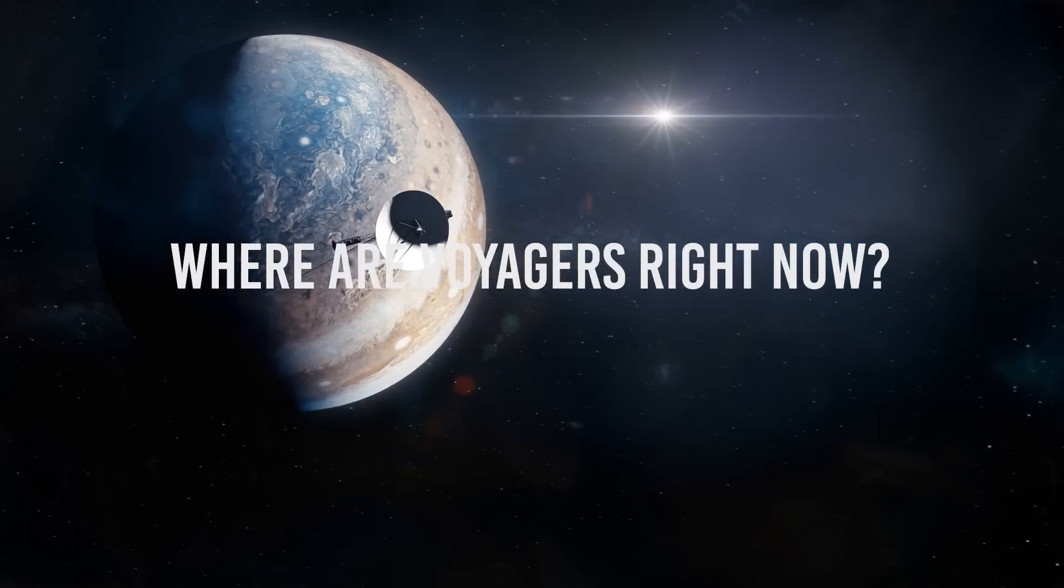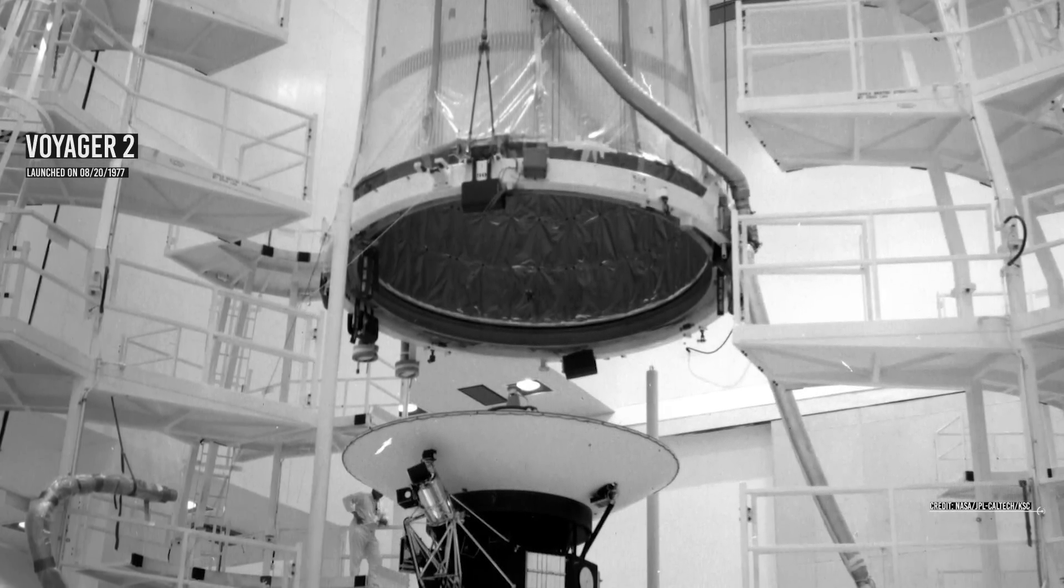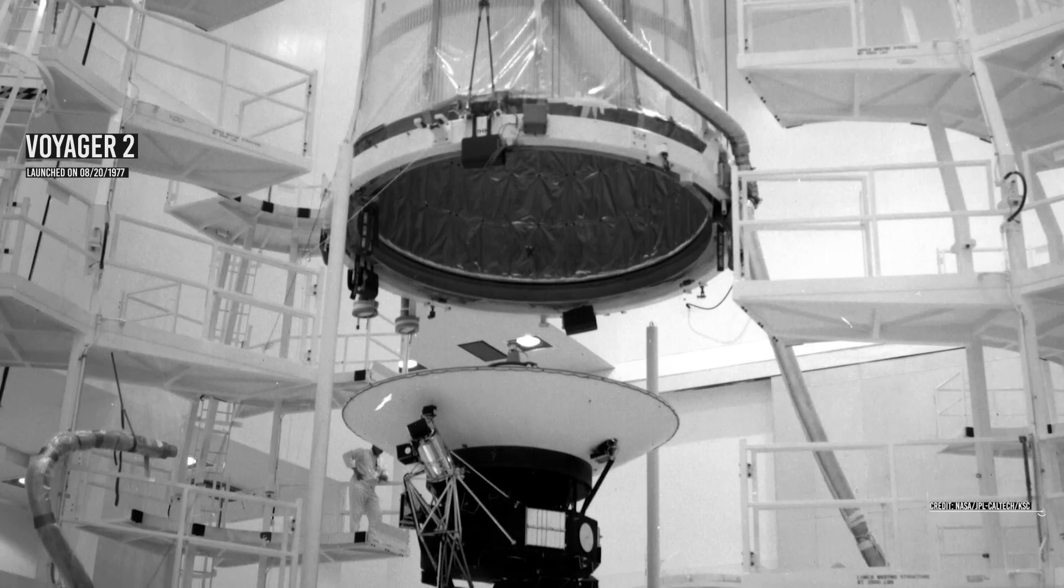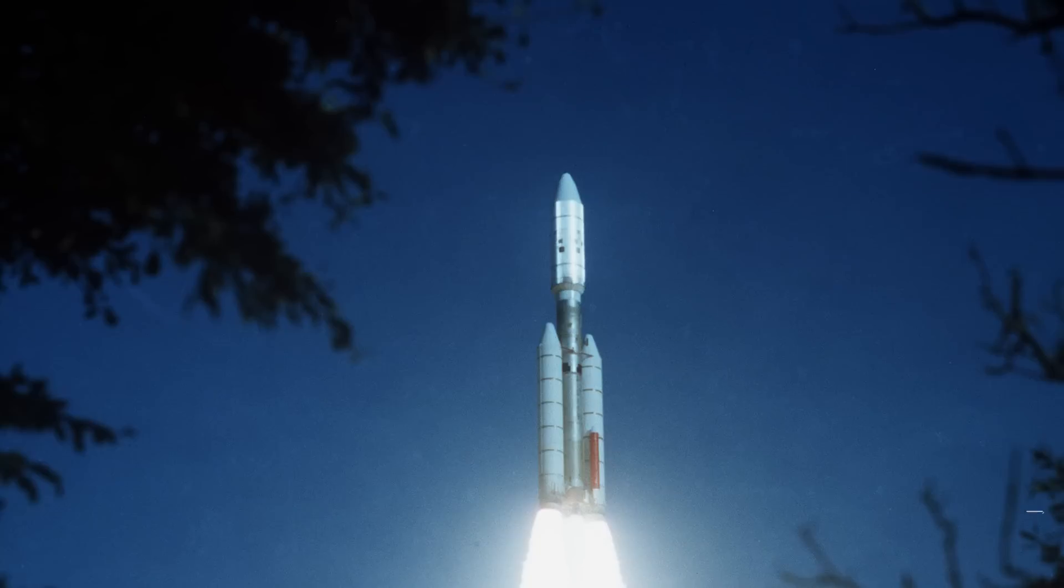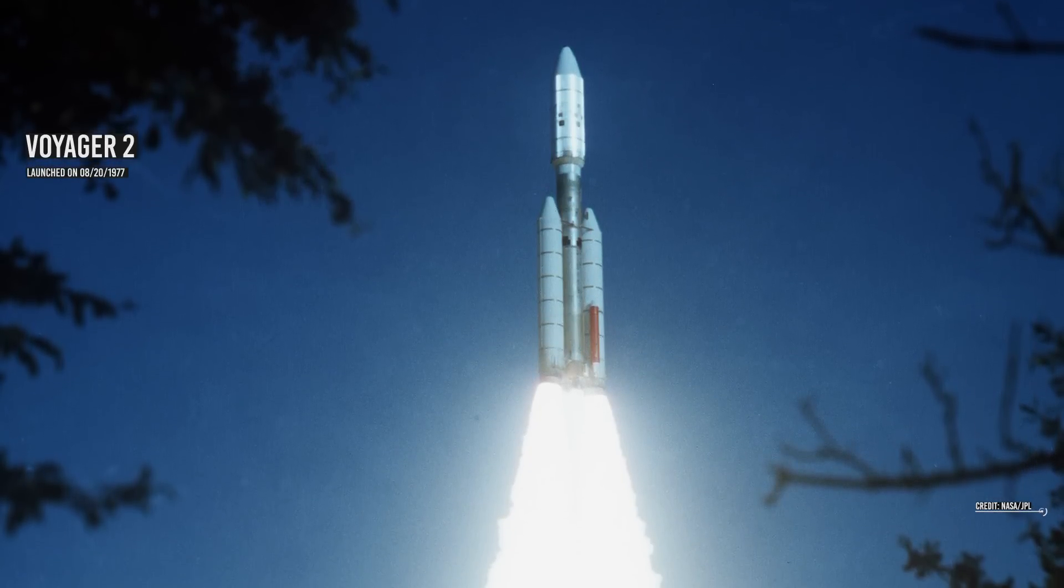Where are the Voyagers now? Voyager 2 launched on August 20th, 1977, 16 days before its twin, Voyager 1. But, due to a faster route, Voyager 1 reached a significant speed and exited the asteroid belt before its twin, Voyager 2.